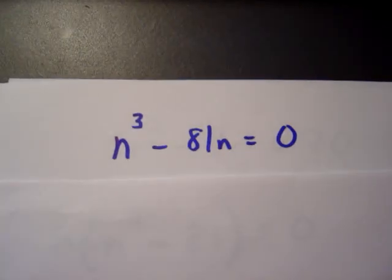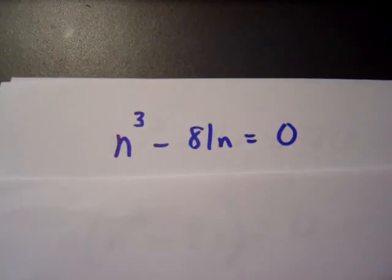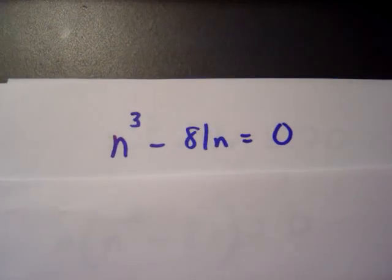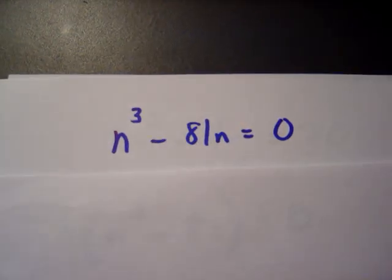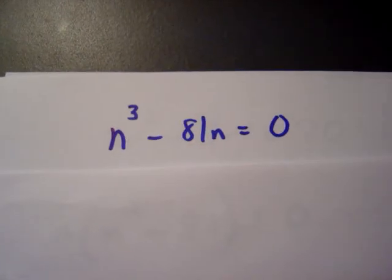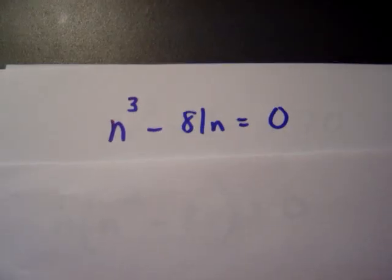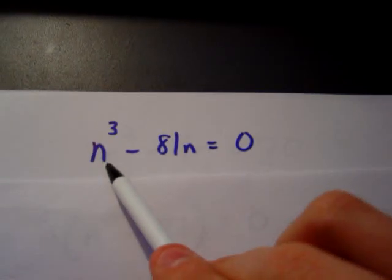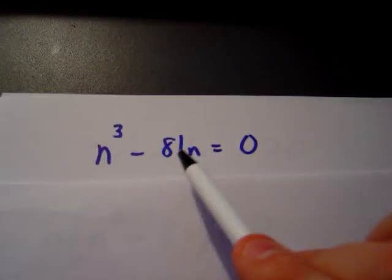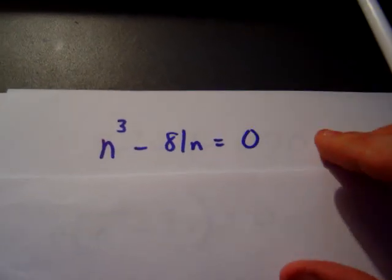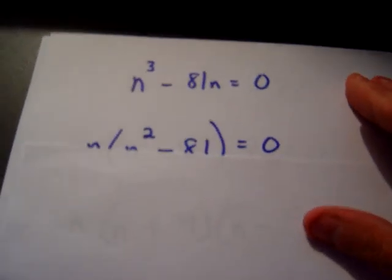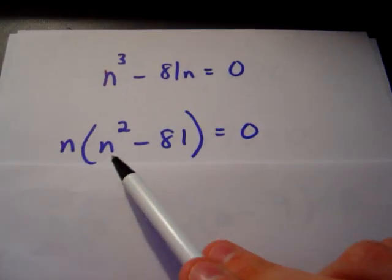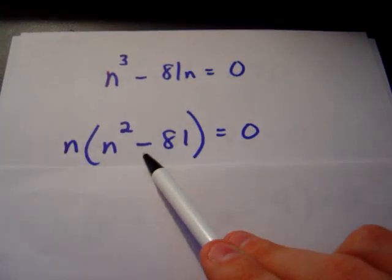Welcome back to part 2 of this video tutorial on factoring to solve equations. Here we have n cubed minus 81n equals 0. Is there something we can factor out here with n cubed and 81n? We sure can factor out an n, leaving us with n times the quantity of n squared minus 81.